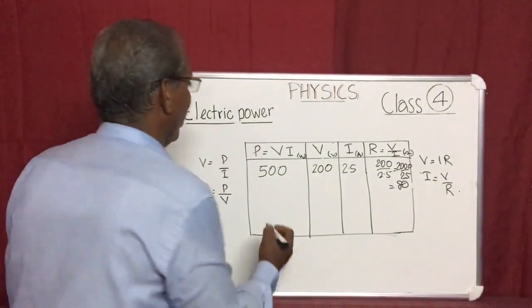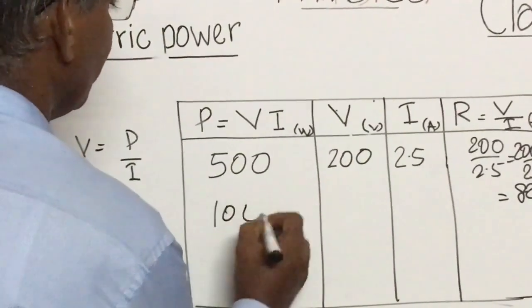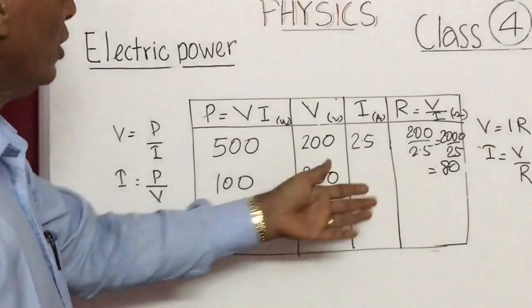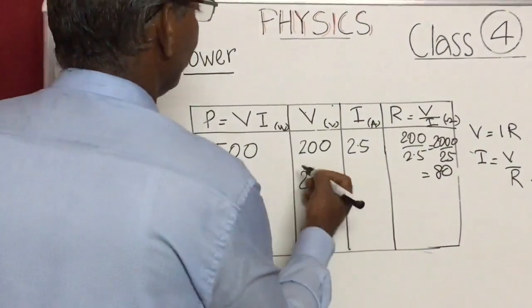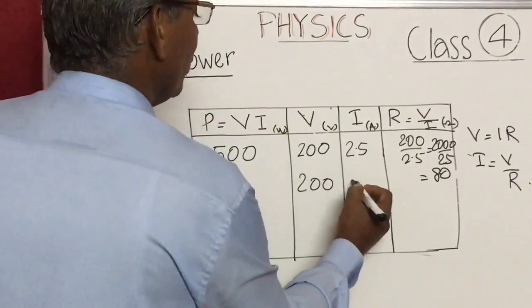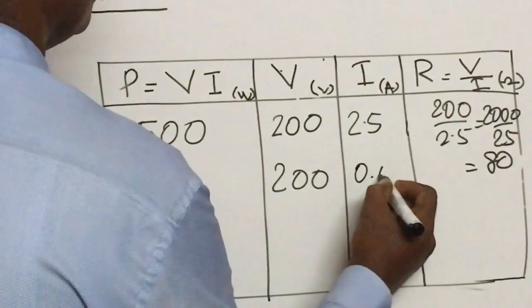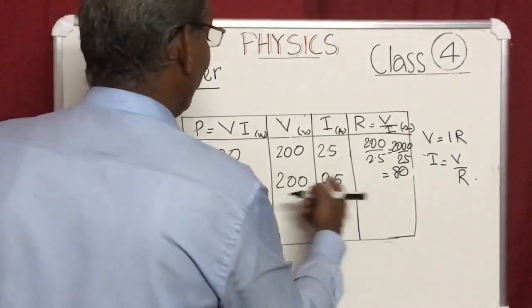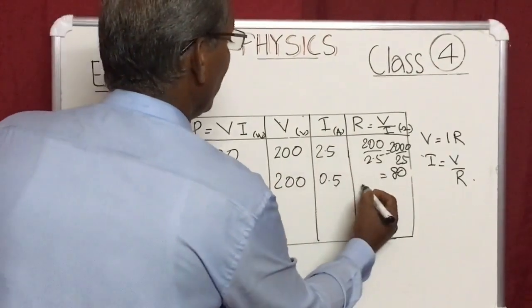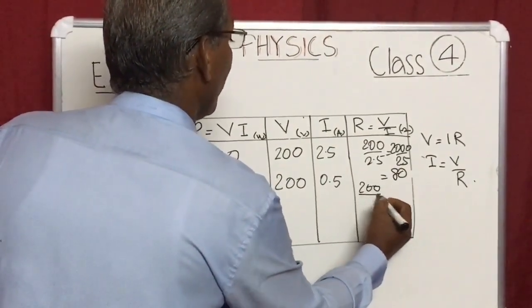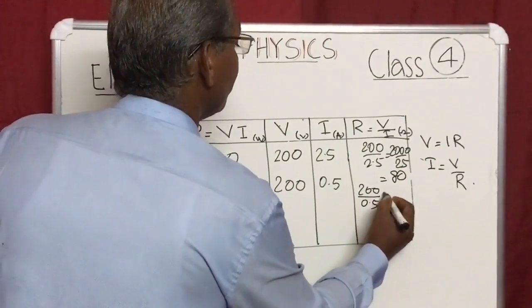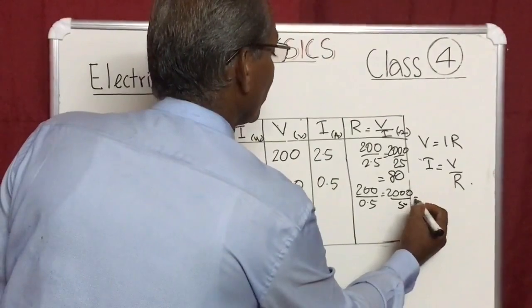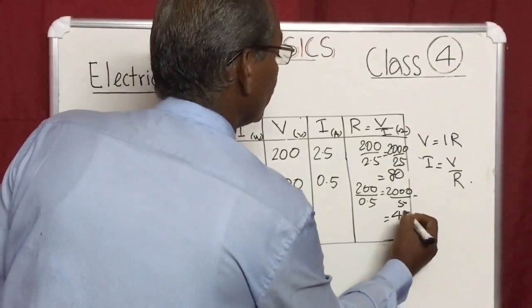Now take another example — a bulb of 100 watts at the same voltage of 200 volts. Current: I = 100/200 = 1/2 = 0.5 ampere. Resistance: R = V/I = 200/0.5 = 2000/5 = 400 ohms.